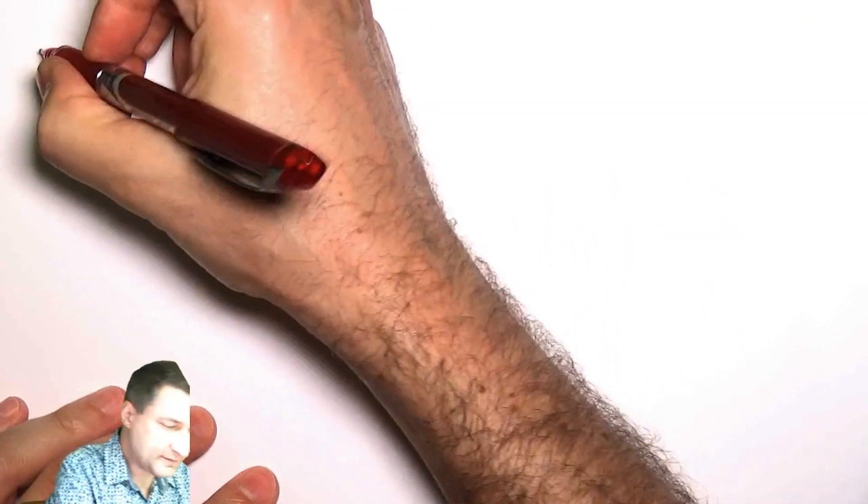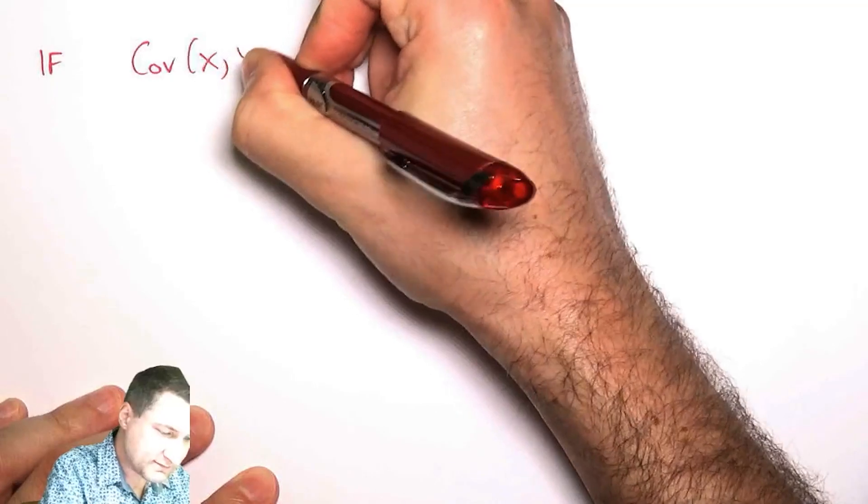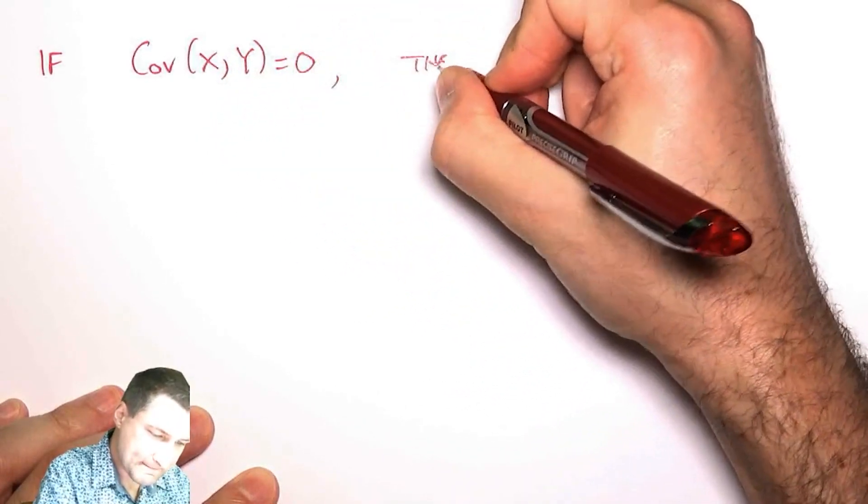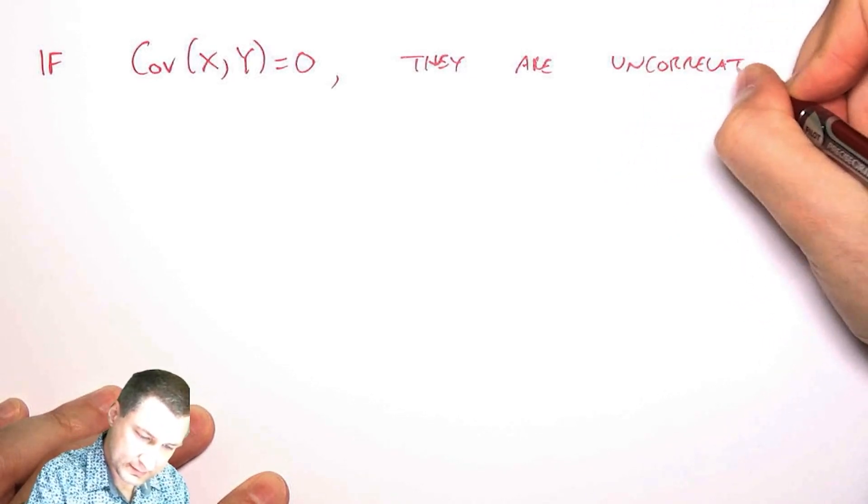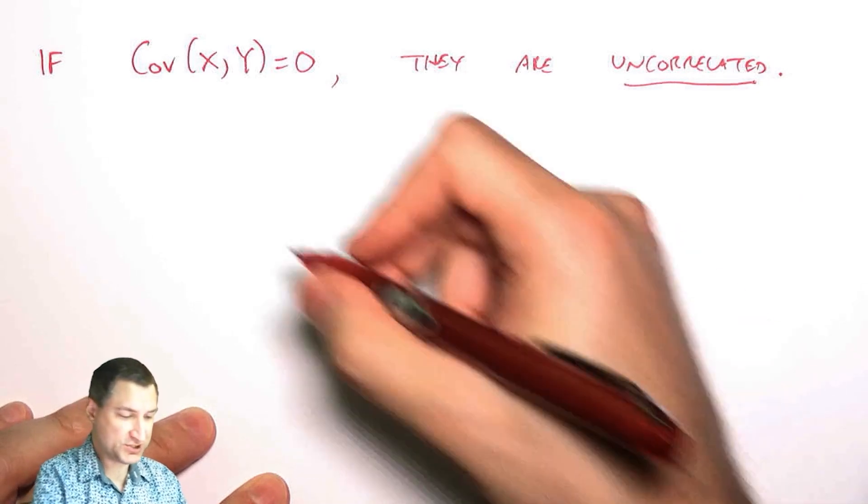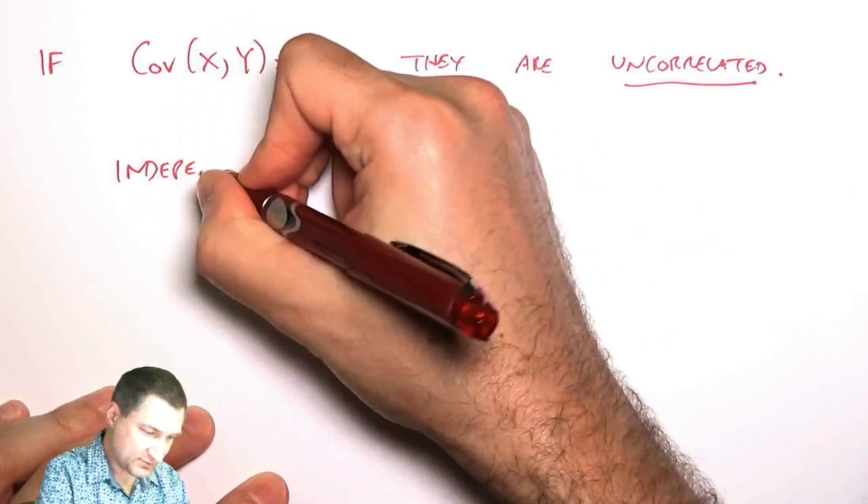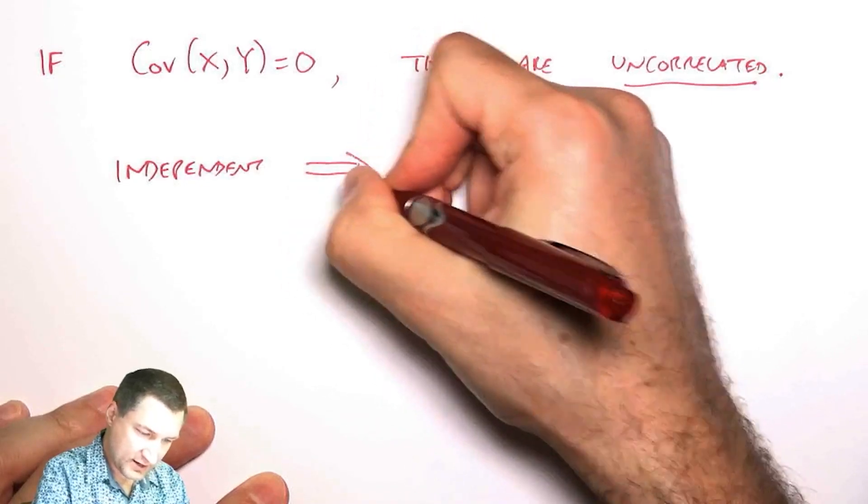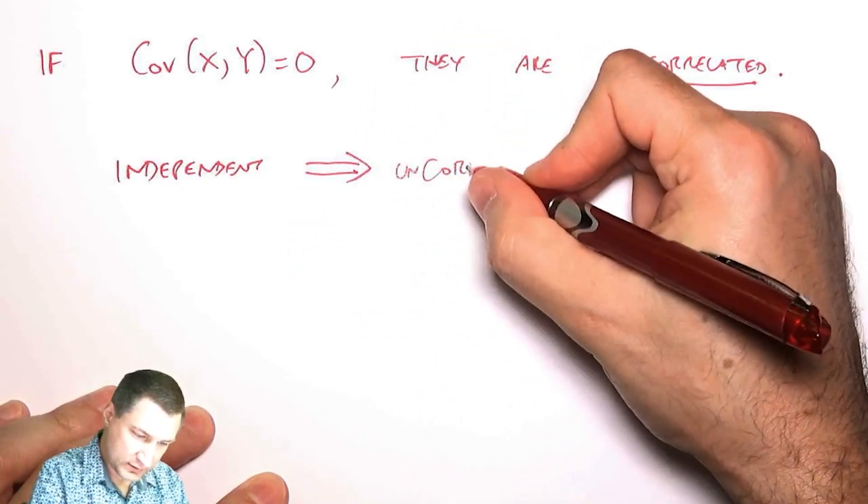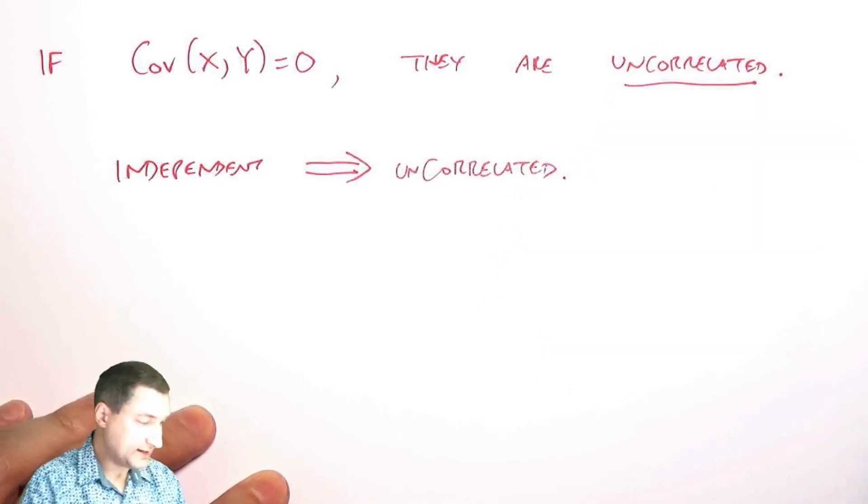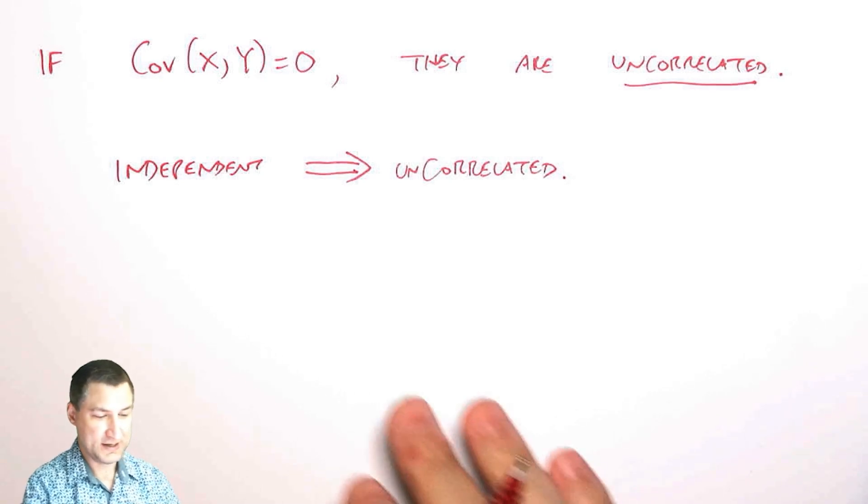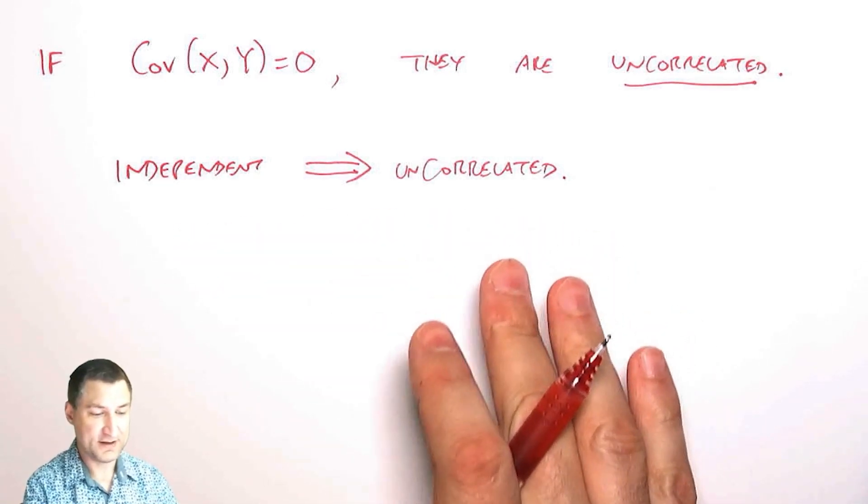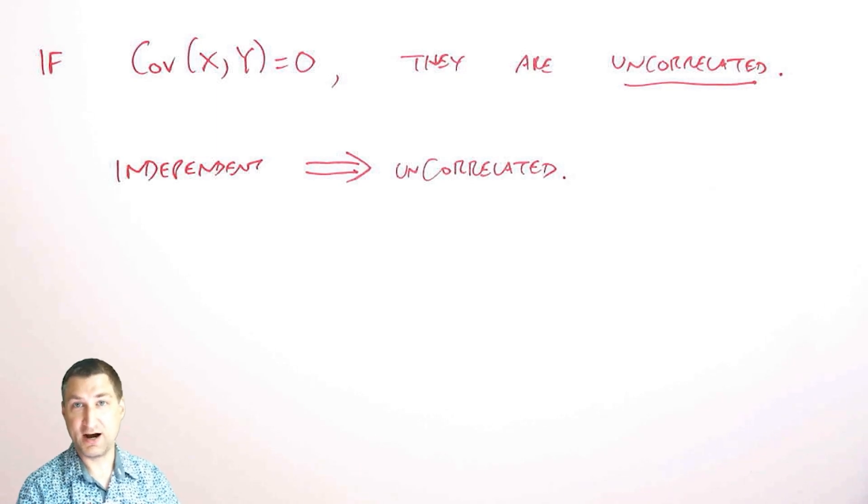So let me write that down specifically. So if the covariance of two random variables is zero, they are uncorrelated. And we just proved that if two random variables are independent, therefore, they are also uncorrelated. Now, as I'll show in the next lesson, the reverse of this is not true. So, you know, independence implies uncorrelated, but I could have two random variables that have covariance equal to zero that are not independent. So we'll do an example of that in just a second.